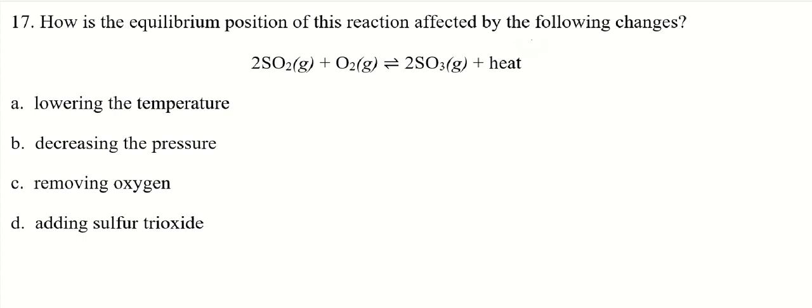So if we lower the heat or lower the temperature, we're doing part A here. The system will try to shift the equilibrium to increase the heat. And since this is an exothermic reaction, it's going to favor the product. So the answer to A is the equilibrium will shift to favor products.